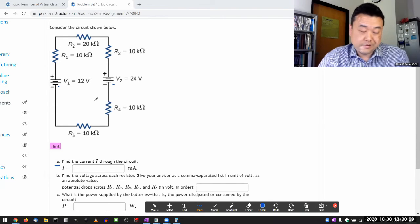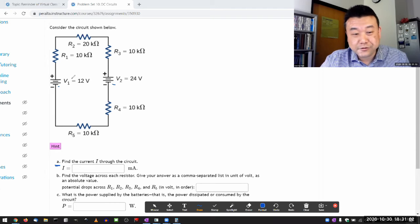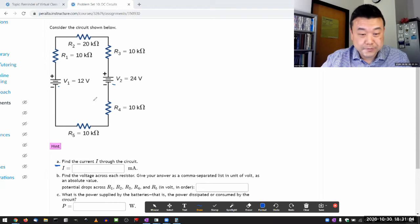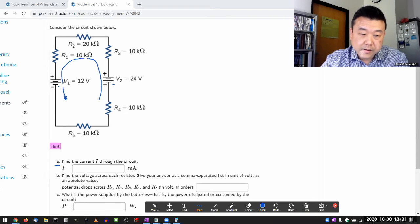So this circuit has no junctions, so I'm not going to be applying junction rule, it only has one loop. So let me define my loop here. Starting from here, I'm going to imagine going around the circuit this way, and then coming back here. So that's my loop.